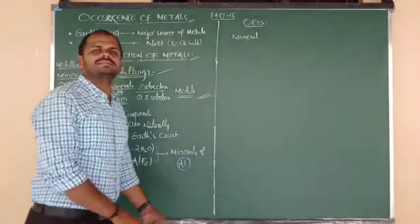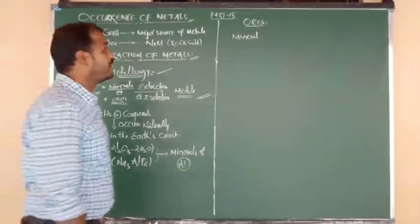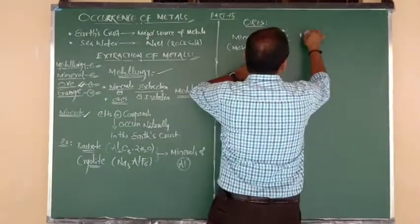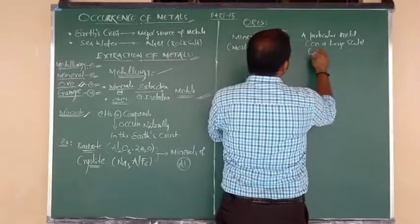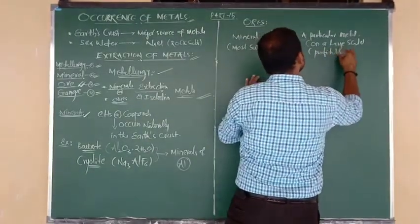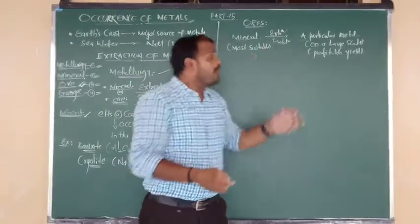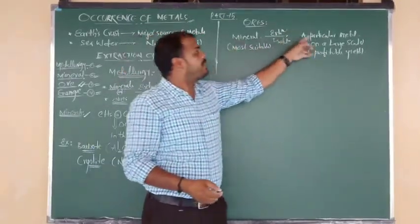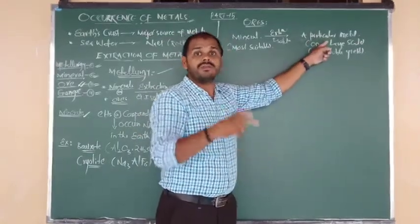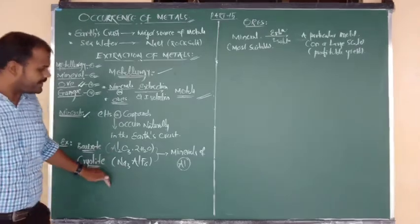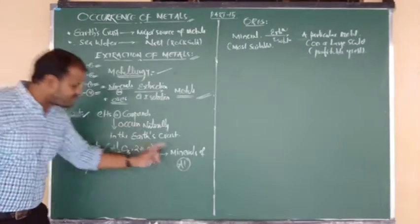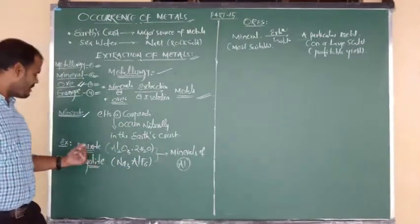One more source we can consider is sea water. Sea water contains a number of soluble salts and soluble impurities. The most common compound from sea water is NaCl — that is rock salt, also called common salt. From that rock salt we can extract the metal sodium.